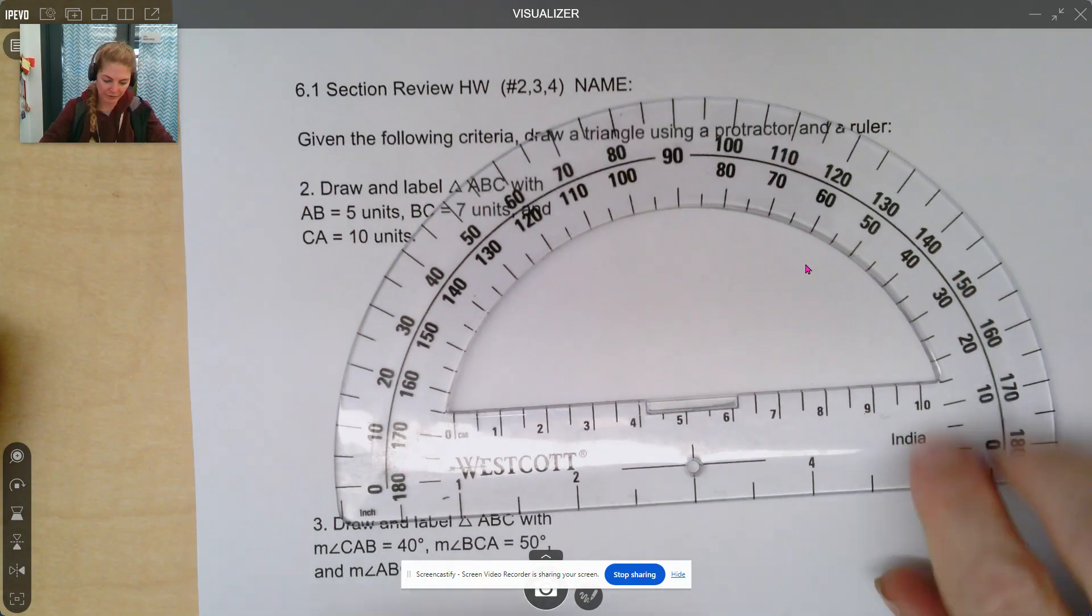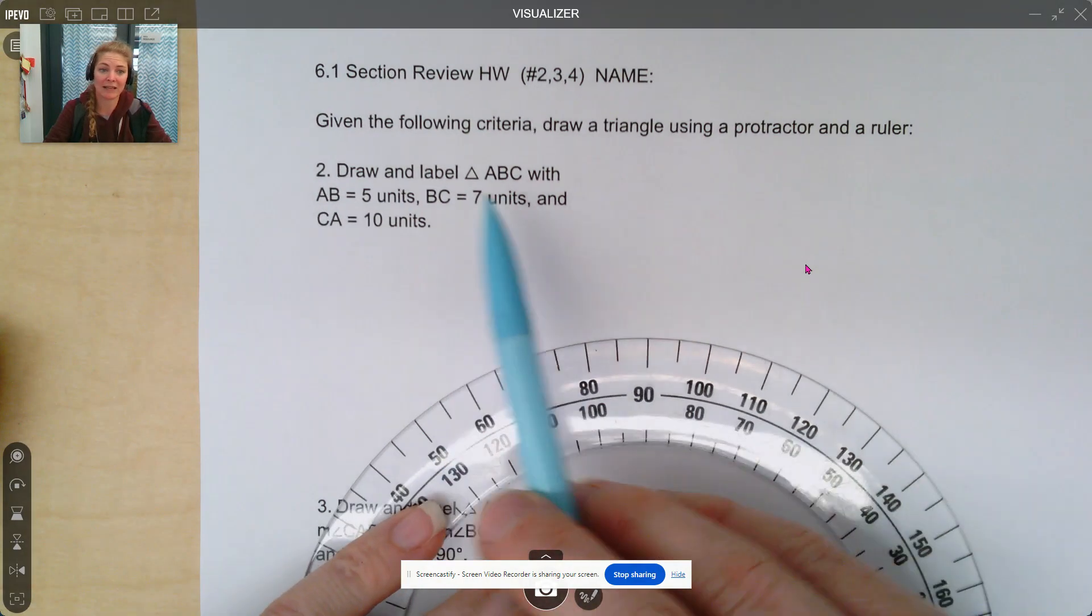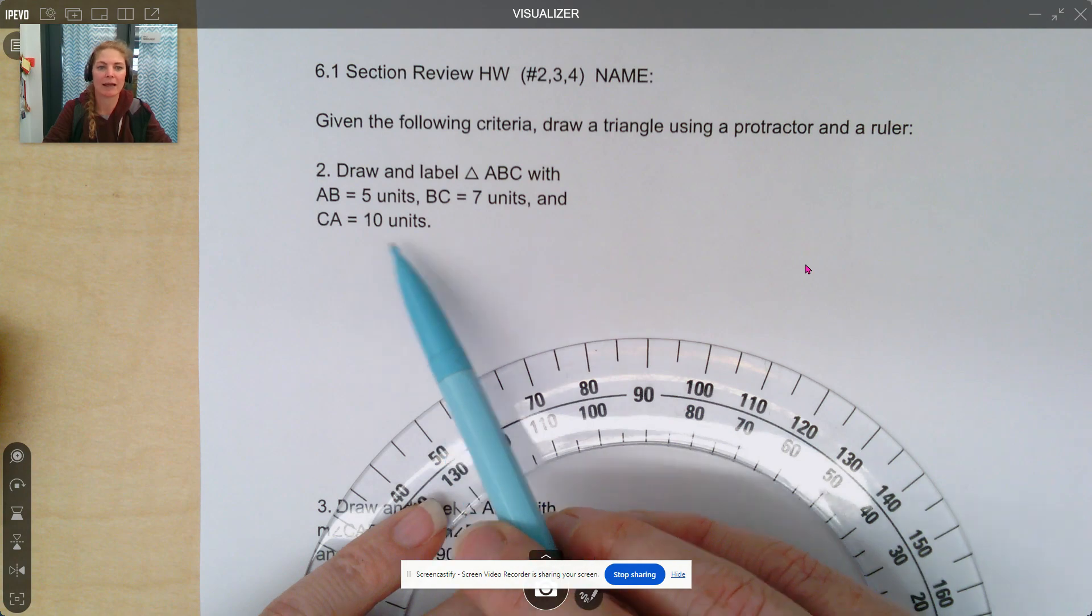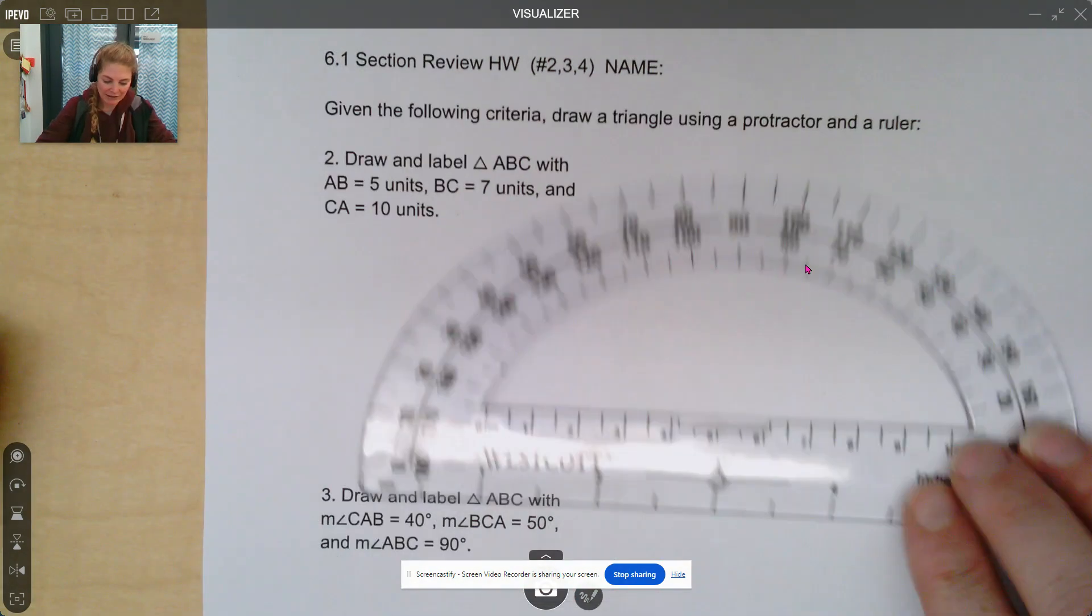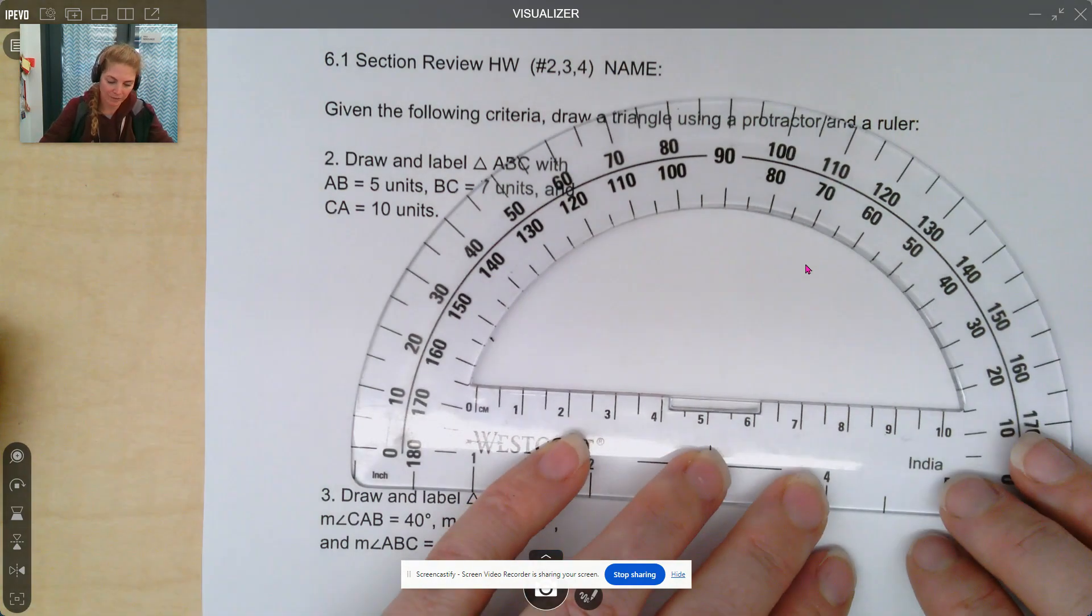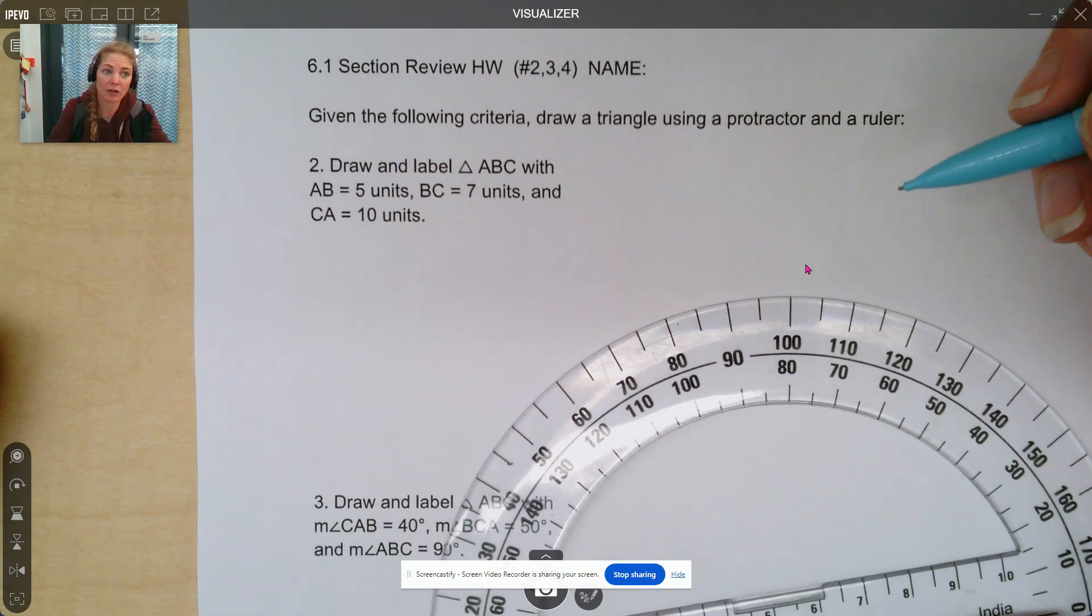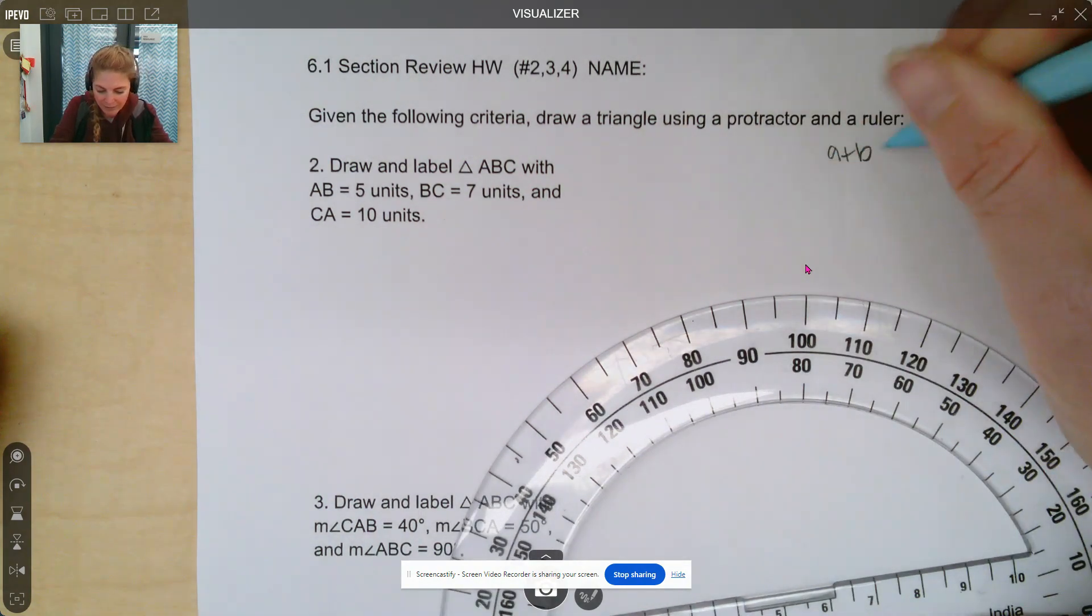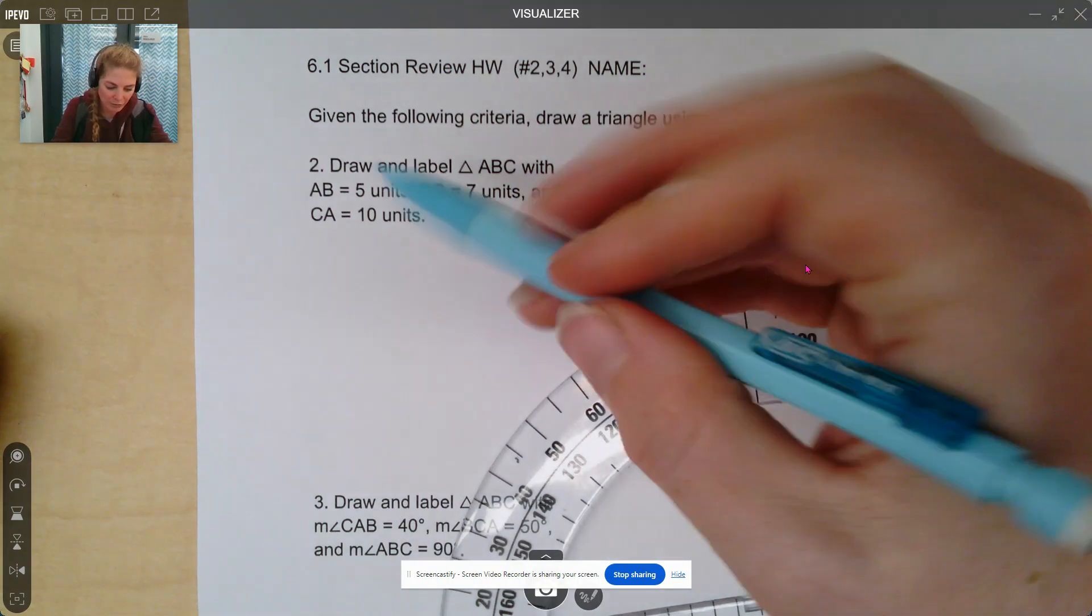Again, using a pencil is important with these because you might have a problem like number 2 that asks you to draw and label triangle ABC with AB being 5 units, BC being 7 units, and CA being 10 units. Because it says units, you can choose to use centimeters or inches. Because I am restricted to a paper, I'm probably going to use centimeters, so it fits. First thing I want to check is will the triangle inequality theorem work? Triangle inequality theorem is A plus B is greater than C, where C is the largest, which here would be 10.